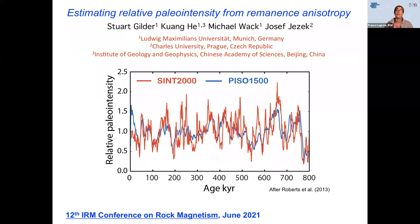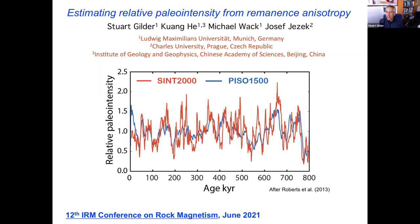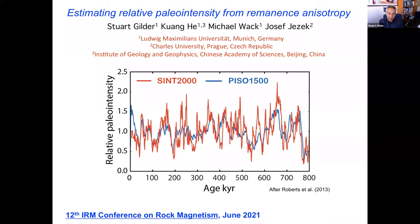Hello from sunny Munich. It's really nice to be with everybody, at least remotely. To continue with the theme, we'll talk today about estimating relative paleo intensity for remanence anisotropy, and I should really include sediments here. I'm only going to talk about DRM acquisition.